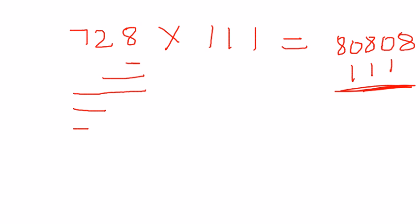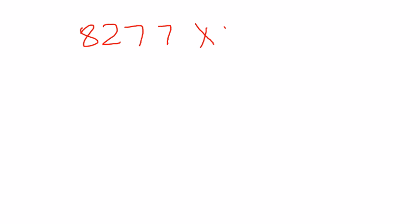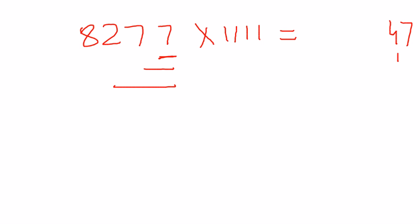Now a four-digit example: 8277 × 1111. Starting with one bar: 7 × 1 = 7. Two bars: 7 + 7 = 14, write 4 with 1 carry. Three bars: 7 + 7 + 2 = 16 plus 1 carry = 17, write 7 with 1 carry. Four bars (max for 4-digit): 7 + 7 + 2 + 8 = 24 plus 1 carry = 25, write 5 with 2 carry.